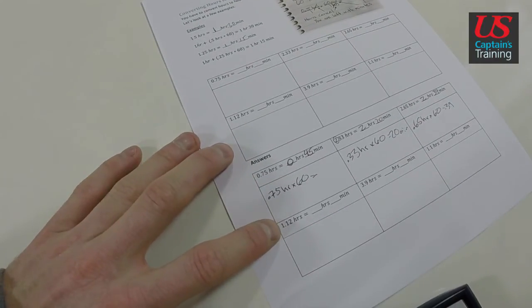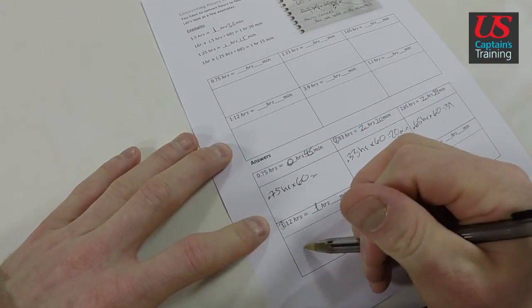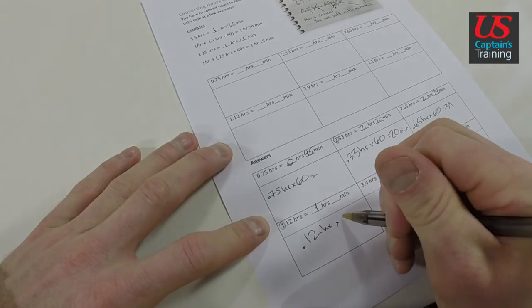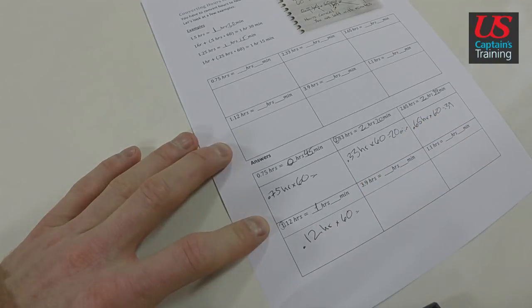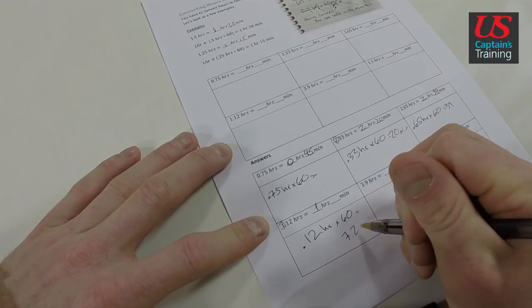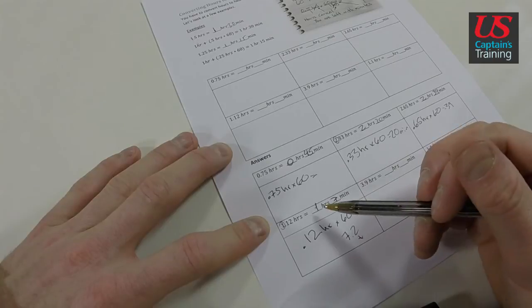1.12 hours is how many hours and how many minutes? We have the 1 - 1 hour. And 0.12 hours times 60 equals 0.12 hours times 60 equals 7.2, which rounds down to 7 minutes. 1 hour, 7 minutes.